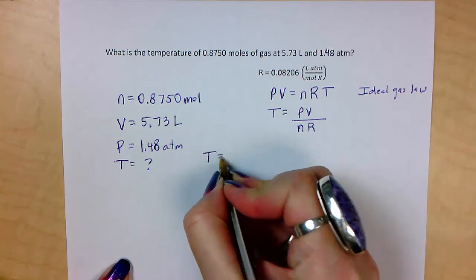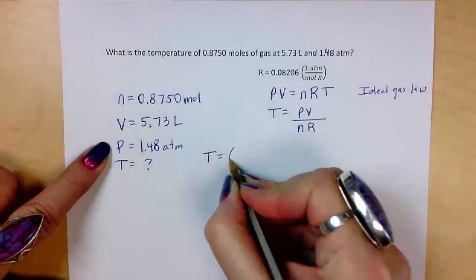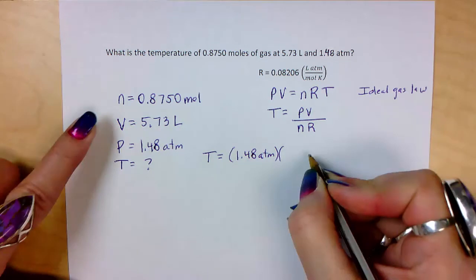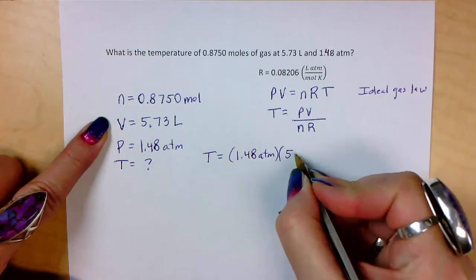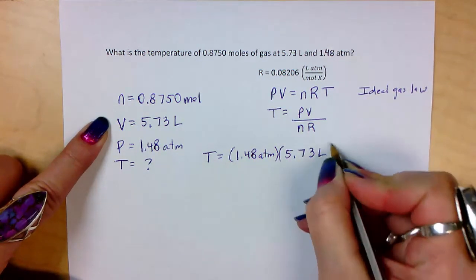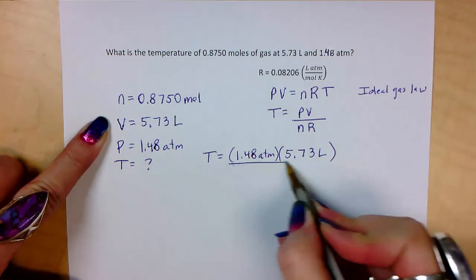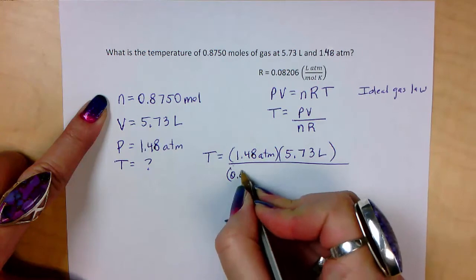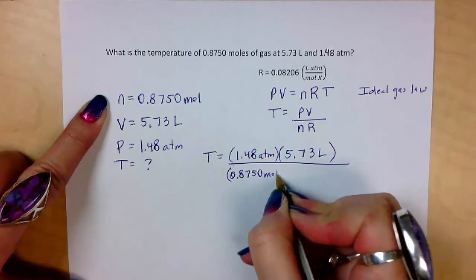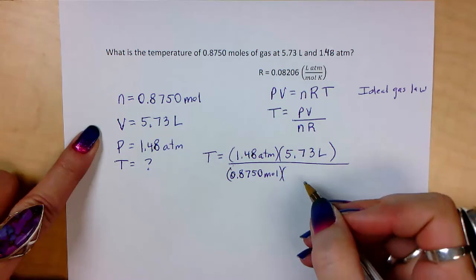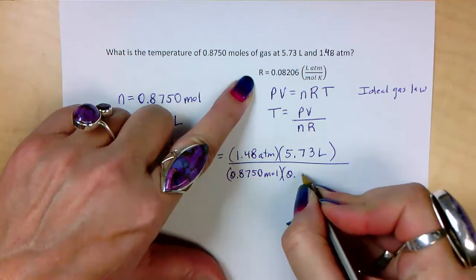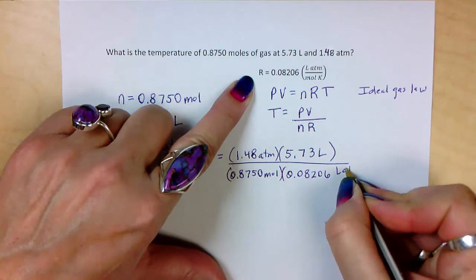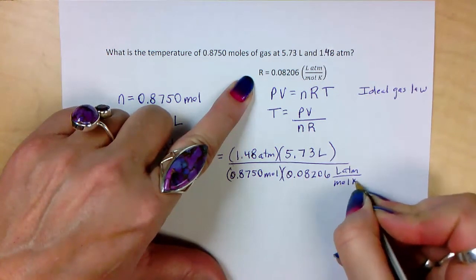So now we're ready to plug in. Our pressure is 1.48 atmospheres. Our volume is 5.73 liters. There's our pressure and our volume. And that is over n. n is 0.8750 moles. And R is given to us, 0.08206 liter atmospheres over mole kelvins.